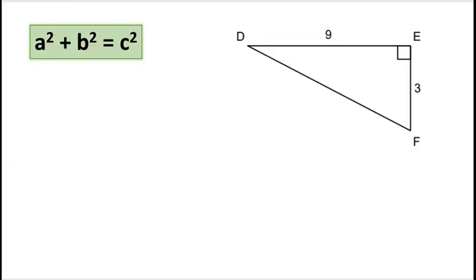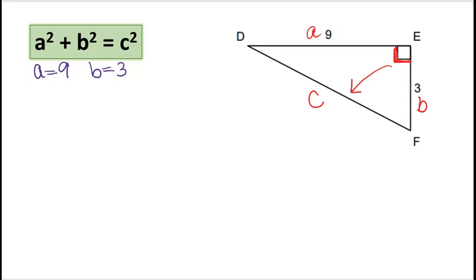So we have a right triangle here. The right angle is right here. The side that is opposite to our right angle and the longest side is always c. So let's call this side a and this side b. The first thing we do is write down what's given to us, what is known. So we know a is 9 and b is 3. Now let's write down what's unknown, what we need to find, which is c. So let's write down the formula: a squared plus b squared equals c squared.